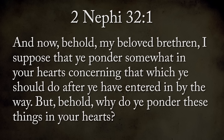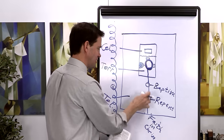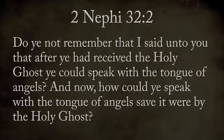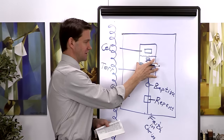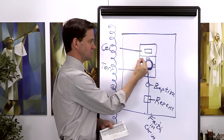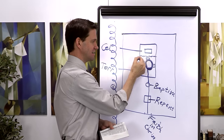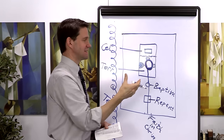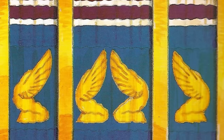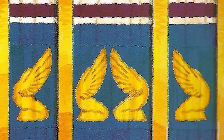'Do you not remember that I said unto you, after you had received the Holy Ghost, you could speak with the tongue of angels? How could you speak with the tongue of angels save it were by the Holy Ghost?' When you are in the holy place, the Holy Ghost is slowly teaching you the tongue of angels. You're learning to communicate in a tongue you weren't born with. There are angels all over the veil, separating and guarding the way into the presence of God.